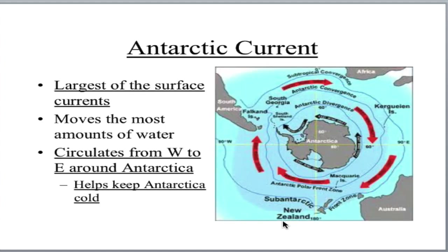The last current we're going to discuss is the granddaddy of them all: the Antarctic Current. This current moves the most amount of water out of any of the surface currents we're going to talk about, and it could have the biggest impact not only on the climate of Antarctica, but the entire globe. This current goes from west to east, circumnavigating Antarctica, and it keeps the continent in a deep freeze.